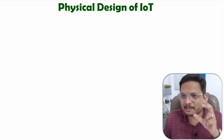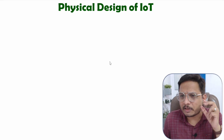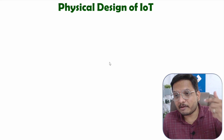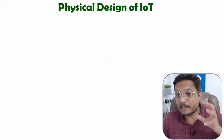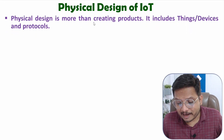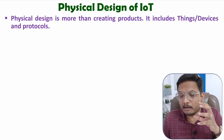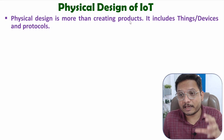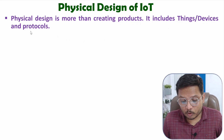When you design an IoT system, it doesn't mean you will be designing just a device. There are so many things that you need to focus on — like what will be the end devices, as well as how the IoT system is interacting with those end devices. All those things we need to take into consideration. Physical design is more than creating a product. Here we are not just talking about creation of products — how the product will be interacting with the IoT system also needs to be considered. So physical design includes things, devices and protocols.